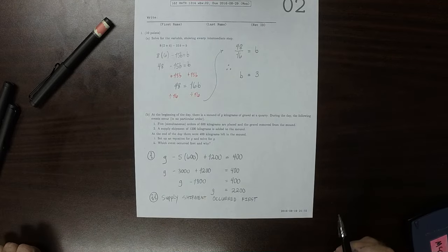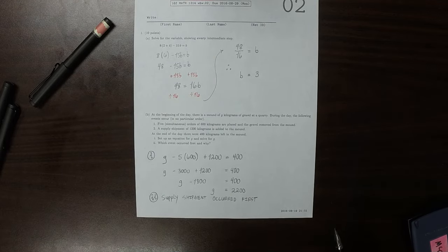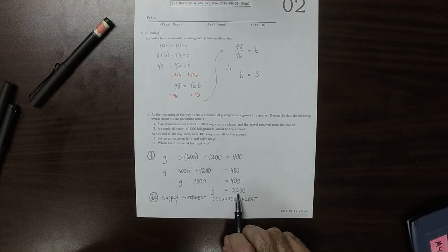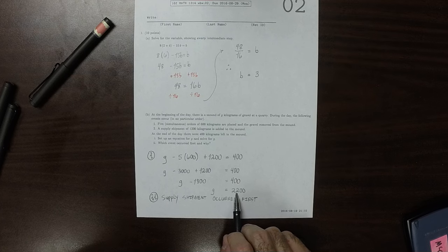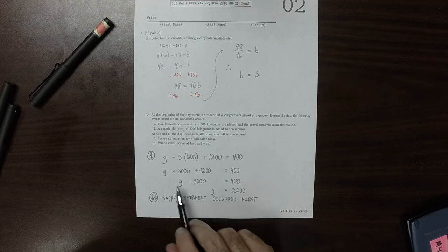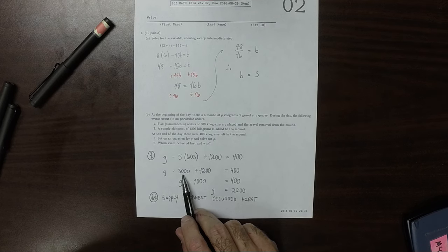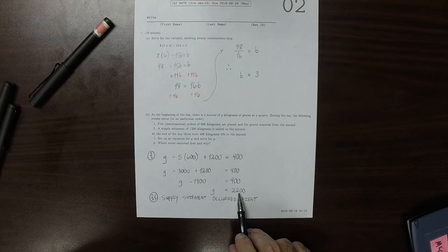The reason it had to have occurred first is because, have a look. We started out with 2,200 kilograms. That's what we started with at the beginning of the day. There's no way a 3,000 kilogram order could be fulfilled if all we had was 2,200 kilograms.